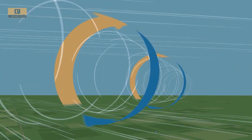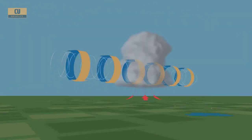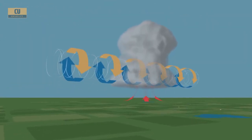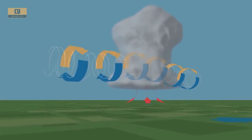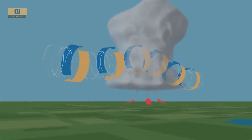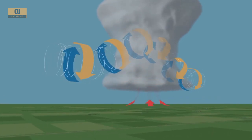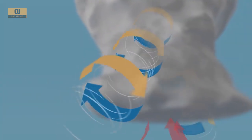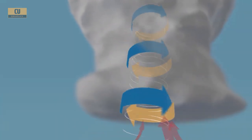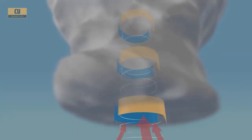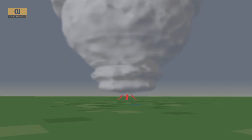In a thunderstorm, warm air rises up within the storm. This is called an updraft. An updraft can turn a horizontal rotating tube of air into a vertical one. When this happens, the whole storm begins rotating, creating a supercell.